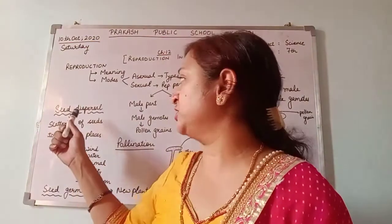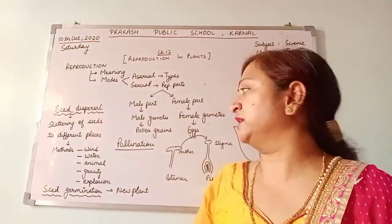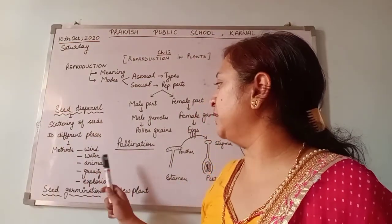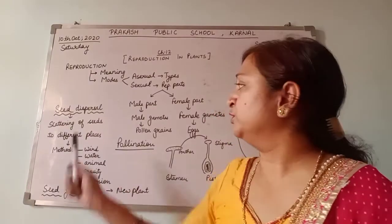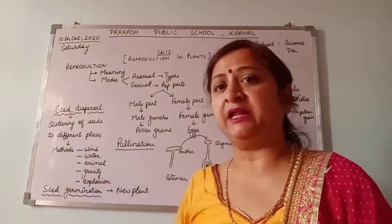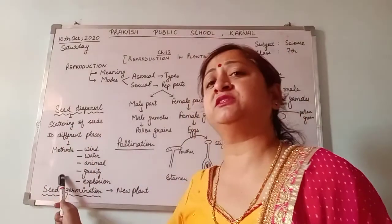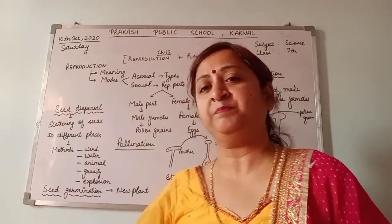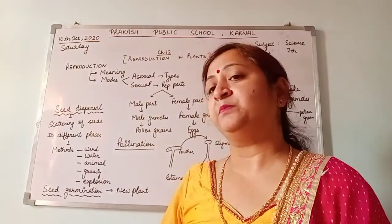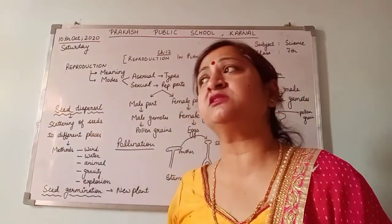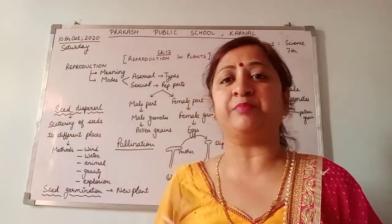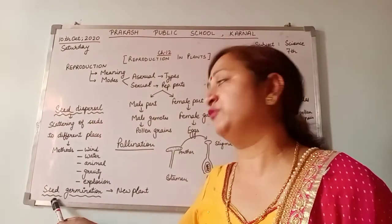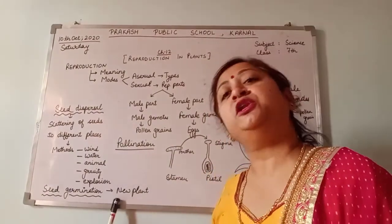Dispersal means scattering of seeds to different places. There are different methods of seed dispersal, such as wind, water, animal, gravity, and explosion. After seed dispersal, when the seed germinates in a particular place, it will get favorable conditions like water, sunlight, temperature, air, and other nutrients. After getting those nutrients, the seed will germinate into a new plant.